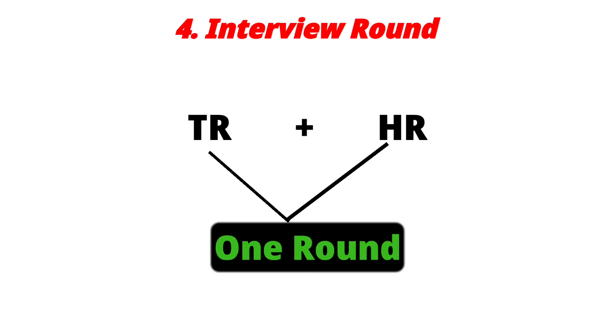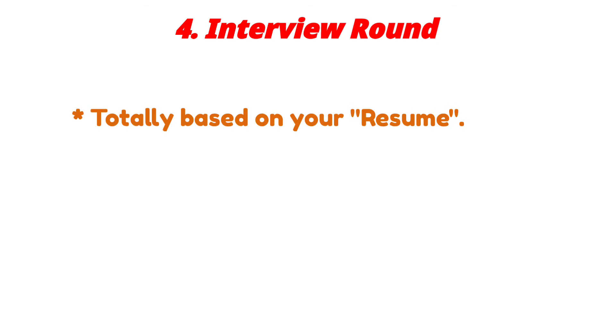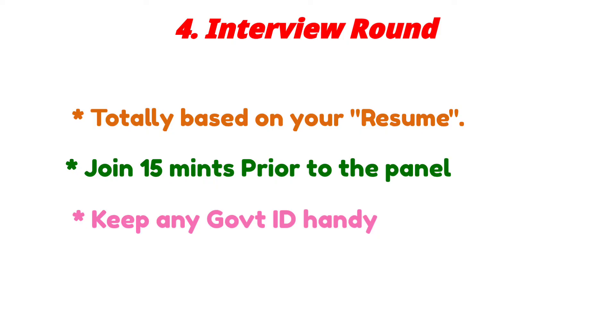The final round is the interview — if you get qualified in the English round then you will be shortlisted for the interview process. In IBM there is a combination of TR and HR interview; there are no separate interviews for TR and HR. Throughout your IBM recruitment process you will be going ahead with only one interview. Key points to remember: make sure you are good with your resume details and have clarity on every point, join at least 15 minutes prior to your interview panel, and make sure you have at least one government ID like Aadhar card or passport.